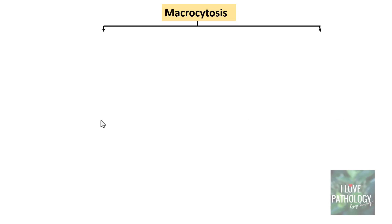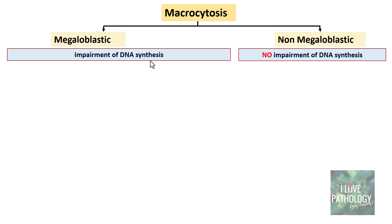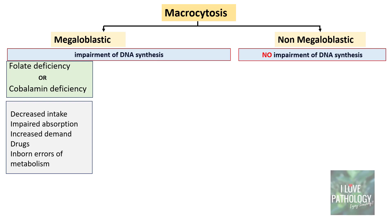The causes of macrocytosis fall into two broad categories: megaloblastic macrocytosis and non-megaloblastic macrocytosis. In megaloblastic macrocytosis there is impairment of DNA synthesis, whereas in non-megaloblastic there is no such impairment. Megaloblastic macrocytosis is most commonly caused by folate deficiency or cobalamin deficiency, due to decreased intake, impaired absorption, increased demand, certain drugs, or inborn errors of metabolism of these two vitamins.